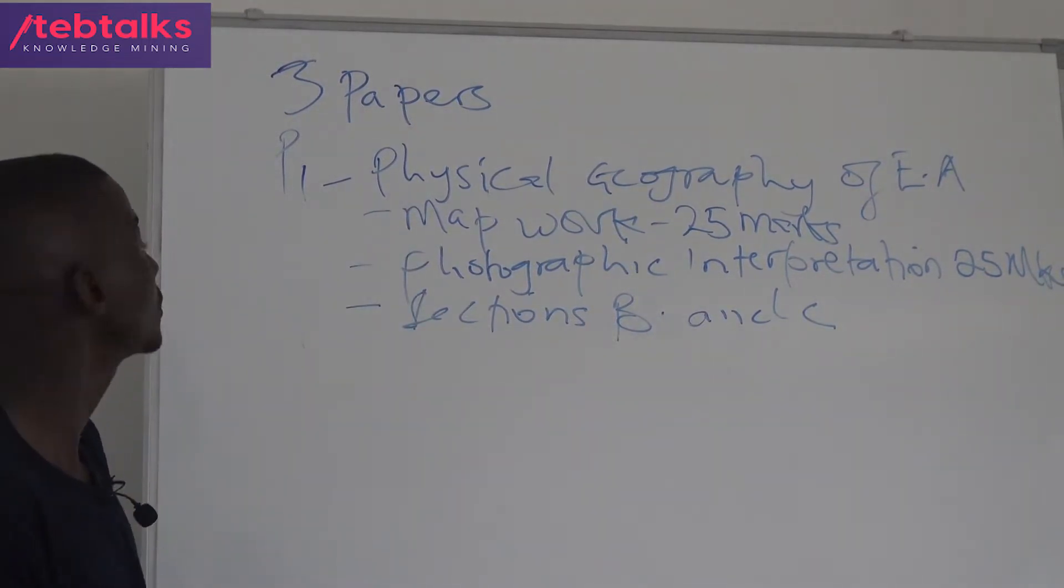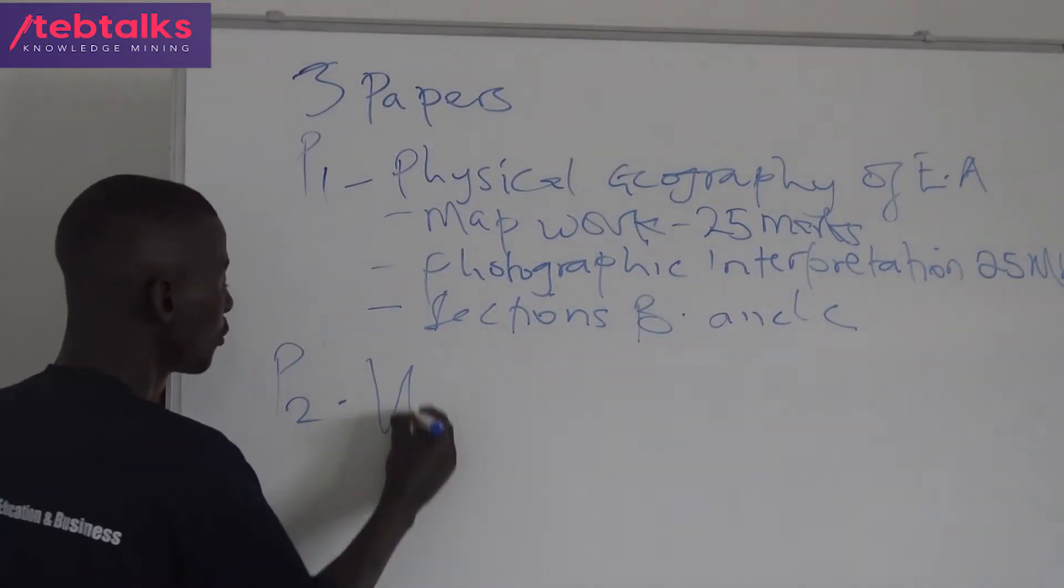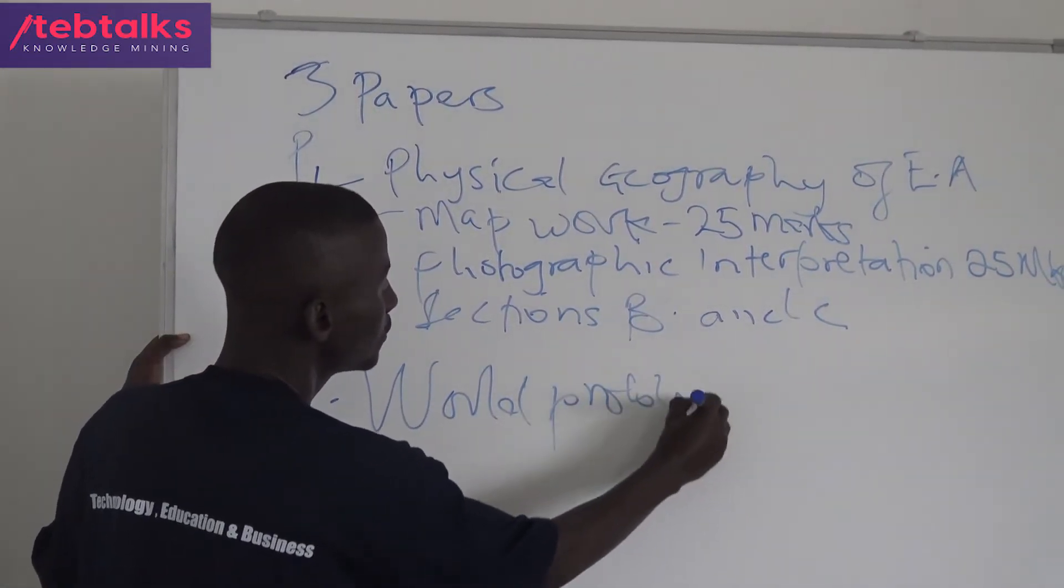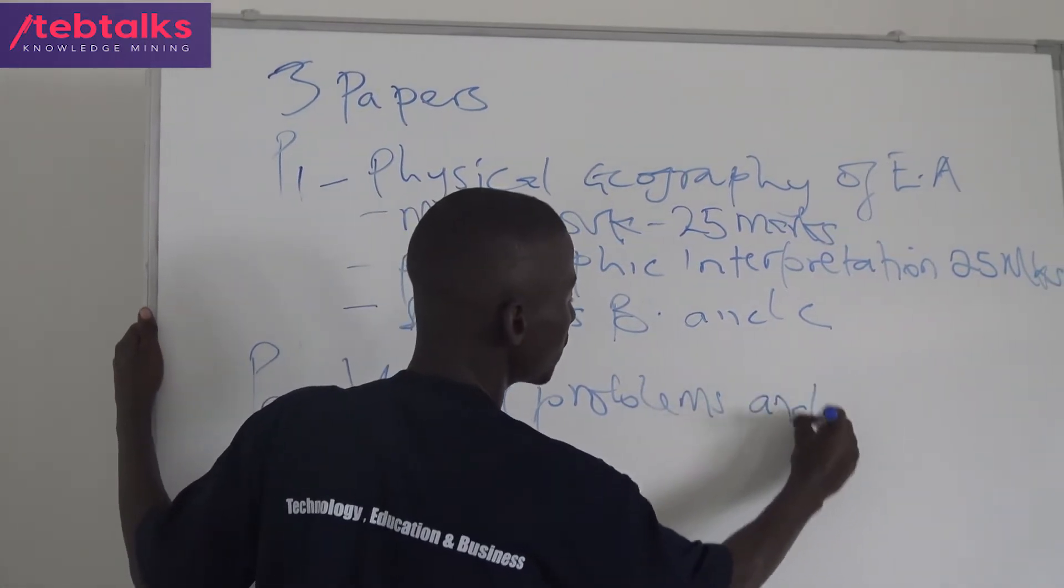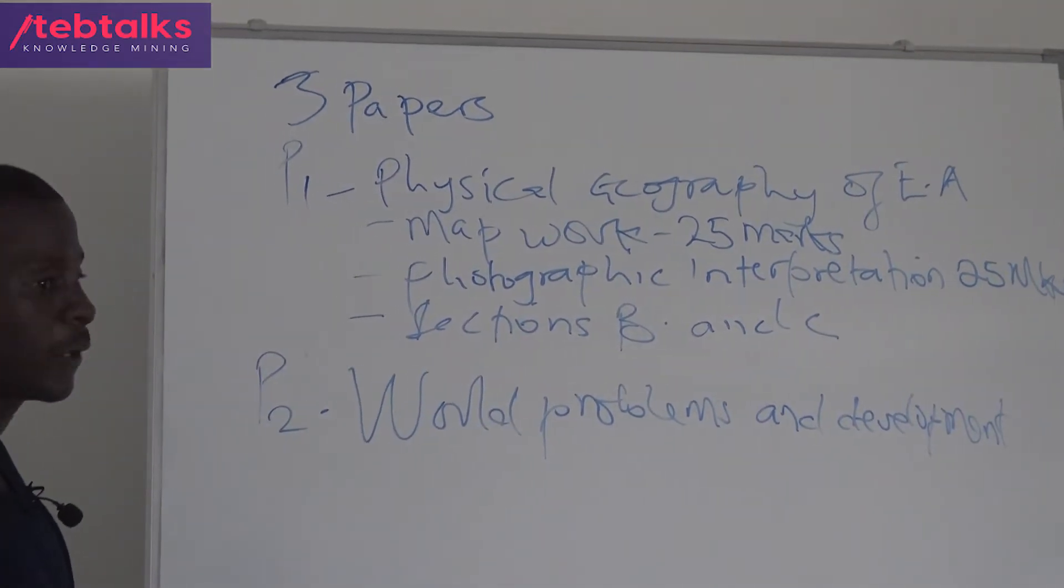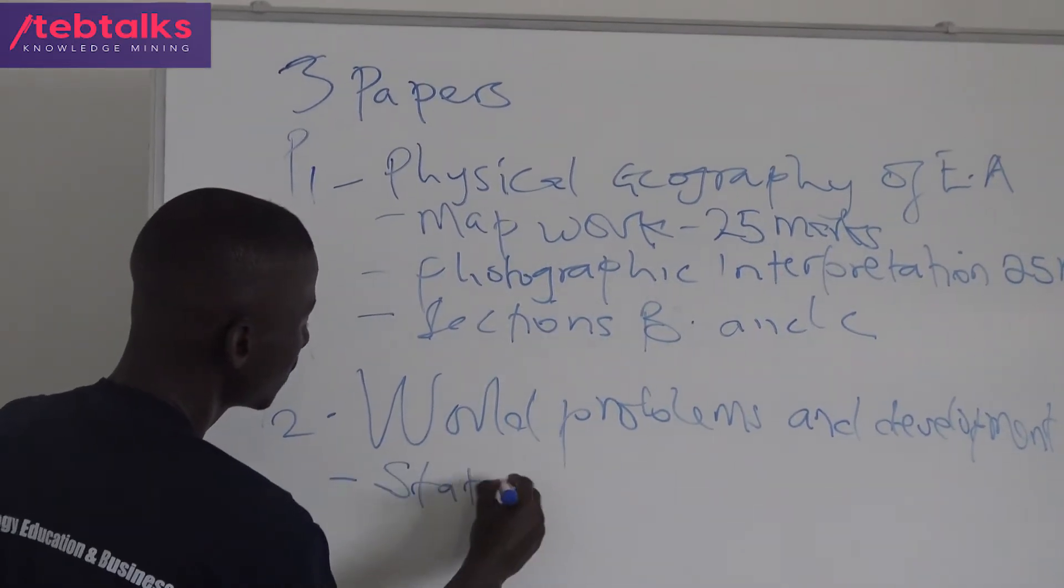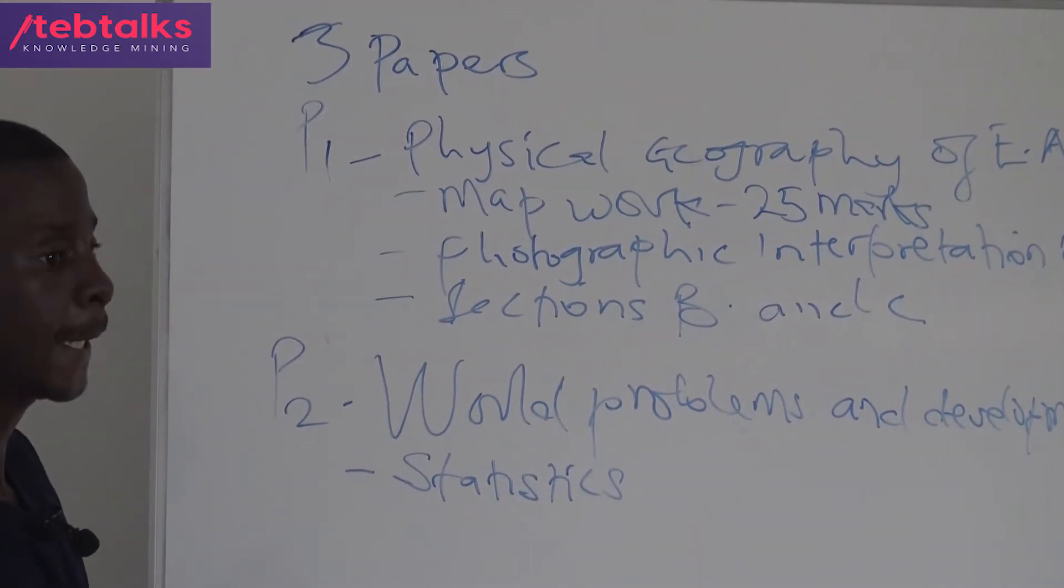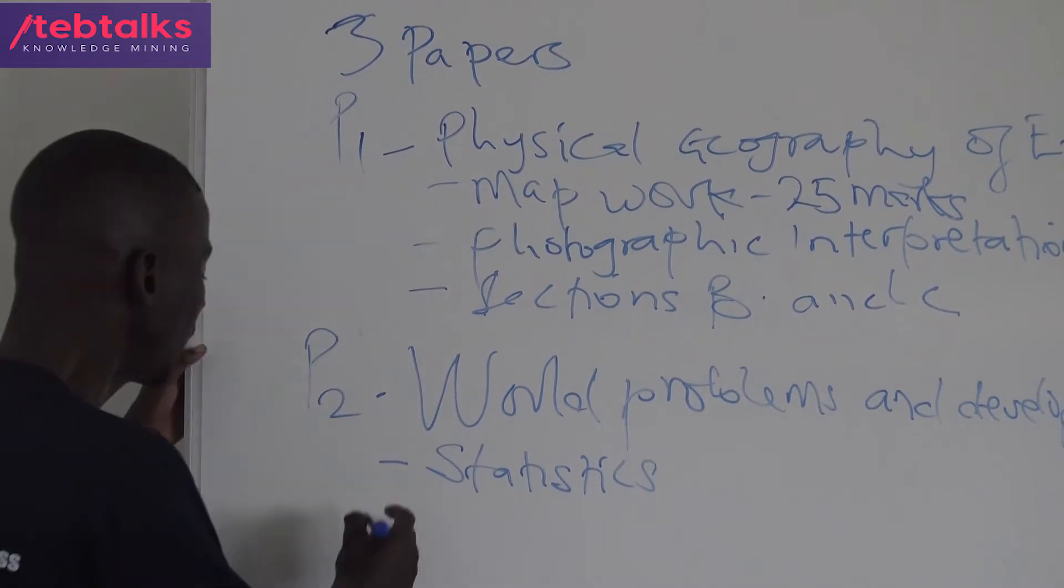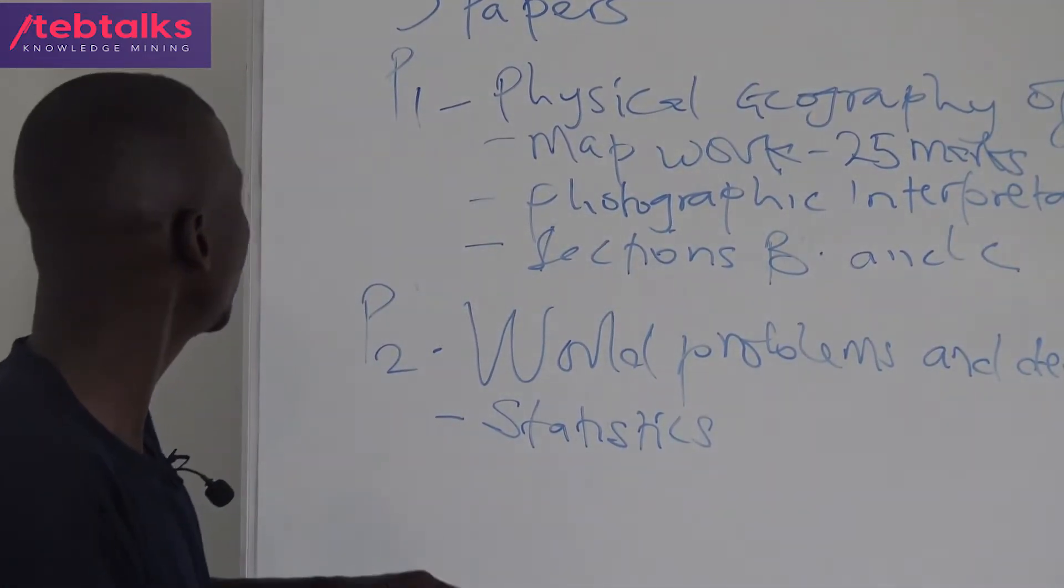Paper 2 is called World Problems and Development. It has one compulsory number, which is statistics, then any other three numbers in Section B for a total of 100 marks. Geography of Uganda is Paper 3.